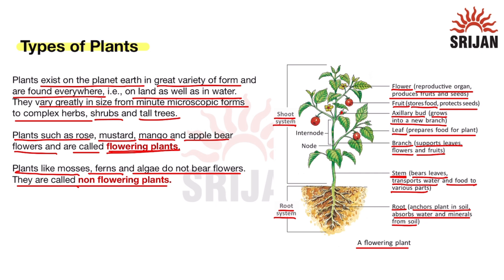The node is the point from which a leaf or branch arises. The gap between two nodes is known as the internode.